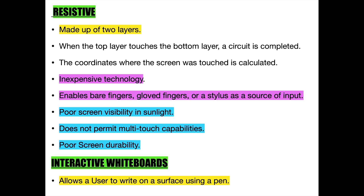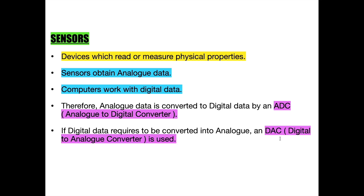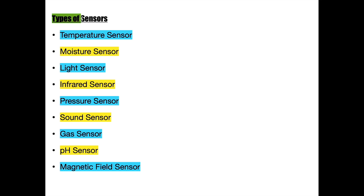The last device we will go through in this video is the sensor. A sensor is a device which reads or measures physical properties. Sensors obtain analog data; therefore, analog data needs to be converted into digital data by an ADC (analog-to-digital converter) so that the computer can process this data. If digital data requires to be converted into analog, a DAC (digital-to-analog converter) is used. Different sensors have been designed for different purposes, and it is important to know at least one example where each sensor is used for a specific purpose.